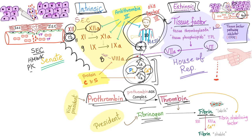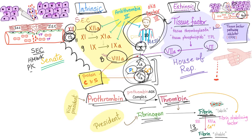Factor 13 is added here to stabilize the fibrin fibers. Who inhibits the intrinsic pathway? You have antithrombin 3, which inhibits thrombin as well as factors 9, 10, 11, and 12. Protein C and S — the topic of today's video — will inhibit factors 5 and 8.